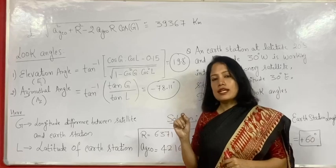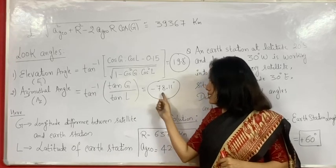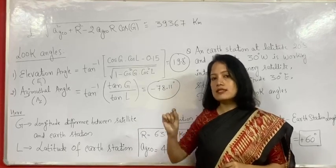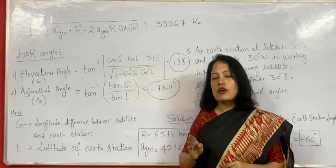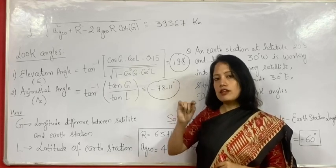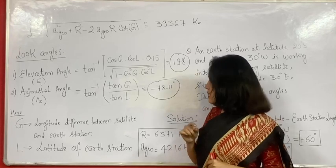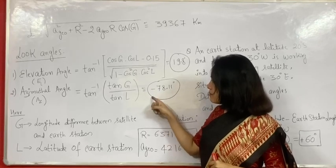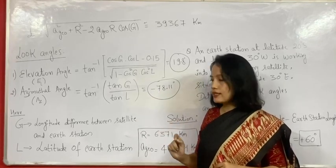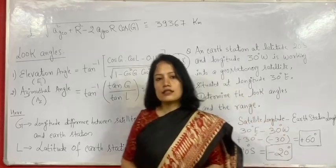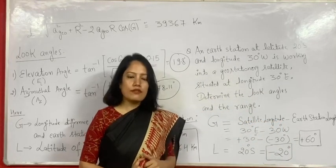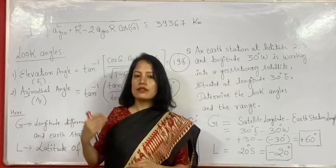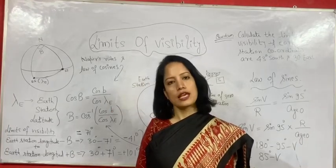The negative sign for the azimuthal angle indicates the direction of measurement — the azimuthal angle is always measured clockwise from north, and a negative value means it was measured in the opposite direction. So I hope you have understood the concept of look angles and how to calculate the different parameters based on these formulas. I hope the video is useful for you. Thank you for watching.